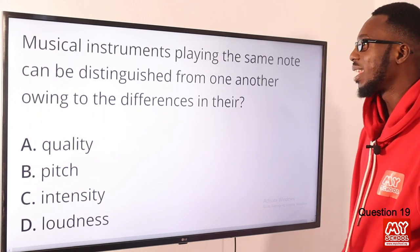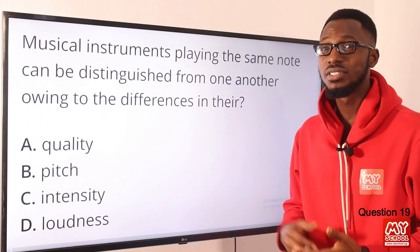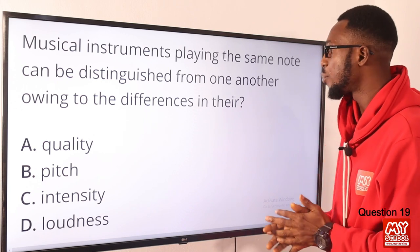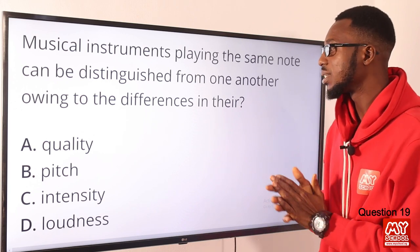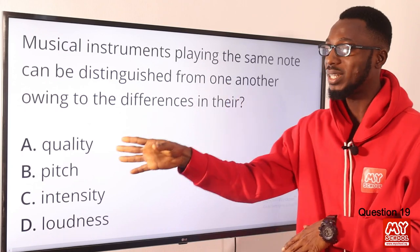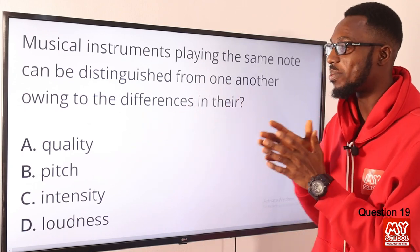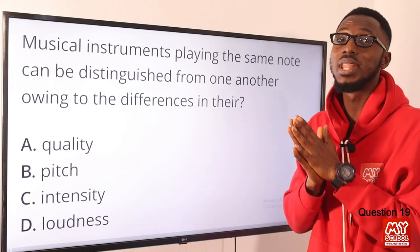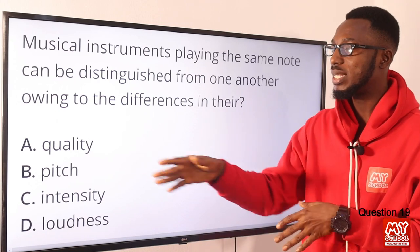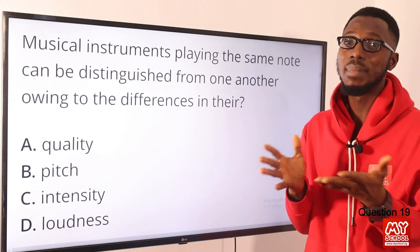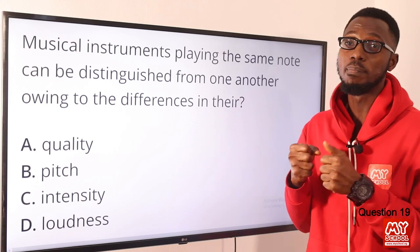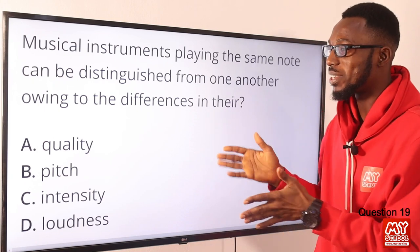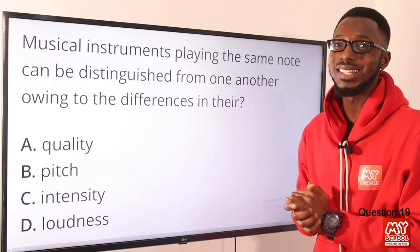Question 19: Musical instruments playing the same notes, same pitch, same loudness can be distinguished from one another owing to differences in their quality. Quality is what you use to distinguish between musical instruments even though they are playing the same notes. Quality is dependent on the fundamental frequency and the blend of fundamental frequency and overtones. The correct option is option A for quality.